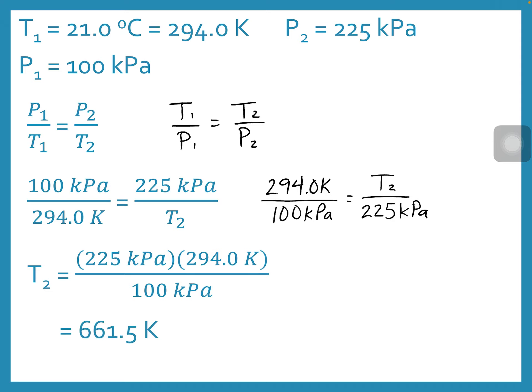And when I solve for that, that is 661.5 Kelvin. If I subtract 273 from that, that is 388.5 degrees Celsius. So just above 388.5 degrees Celsius is where that glass vessel would shatter. So it said that it could withstand 225 kilopascals. So if we go over that, that's where it would shatter, and that would happen once we go over 388.5 degrees Celsius.